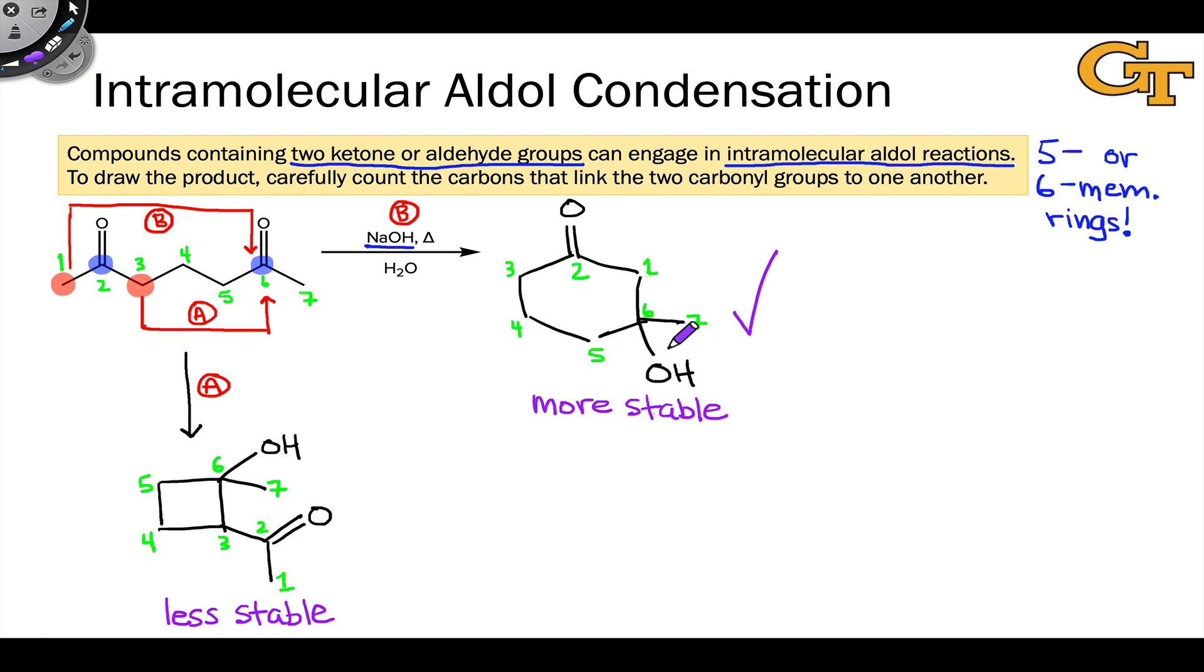What this means is that we can generate the 6-membered ring product selectively when we hit this substrate with base to engage in an aldol reaction. The 4-membered ring product is not observed at all in fact. And the 6-membered ring product can be formed in very high yield under these conditions which promote formation of the thermodynamically more stable product with a relatively weak base and heat and the like.